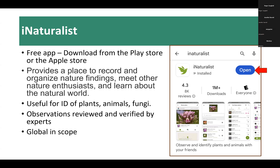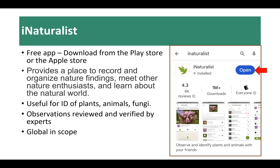Like Merlin, iNaturalist is global in scope — it's a kind of way to travel the world without leaving home. When you first open the app, it shows your observations so far. Mine showed 863 observations covering 249 species. Clicking the green button at the bottom gives you options: take a photo of what you're seeing in the field, choose an image already on your phone, record a sound you're hearing in nature, or choose a sound already recorded on your phone.